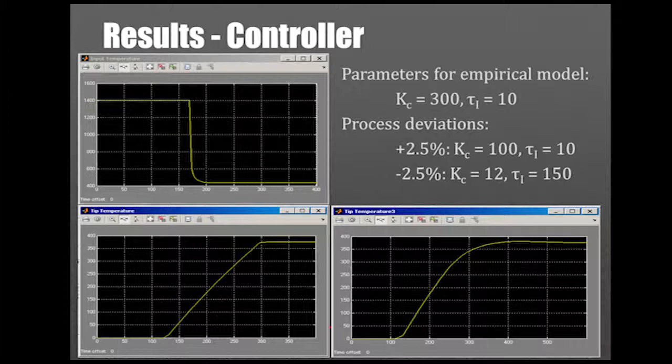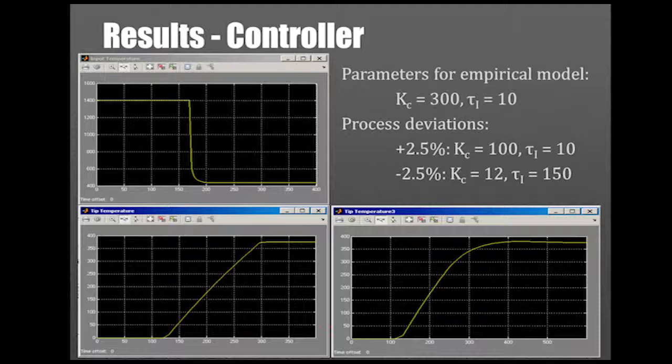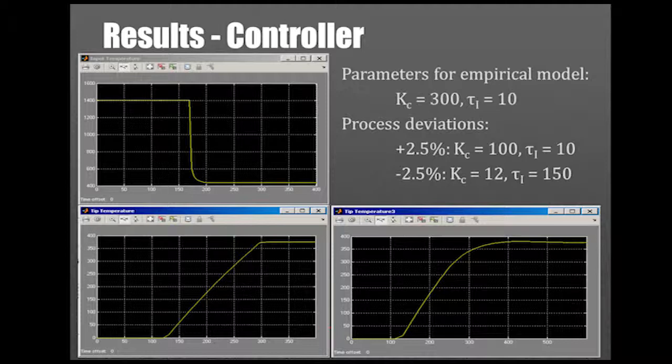Once we had that for our actual model, we figured, what if you're out in industry and the rod that you order isn't quite up to the specs you want? So we figured we'd try and use our empirical data and our controller to fit a new model. We assumed we'd do a plus or minus 2.5% of our specifications.